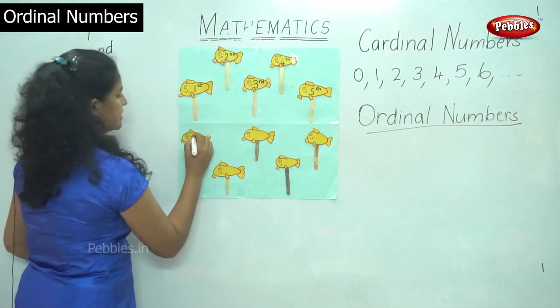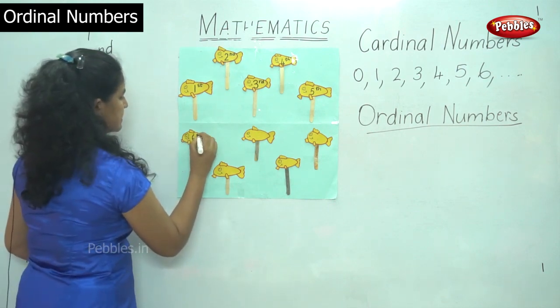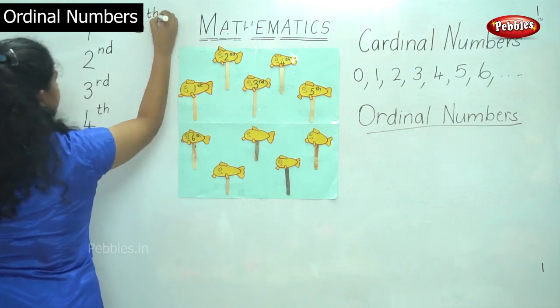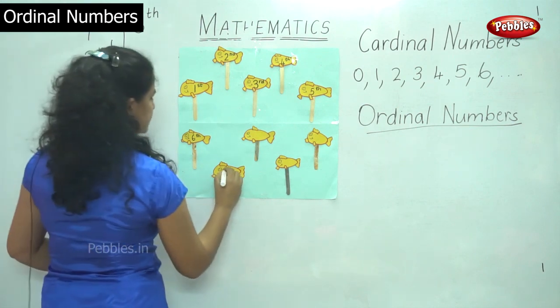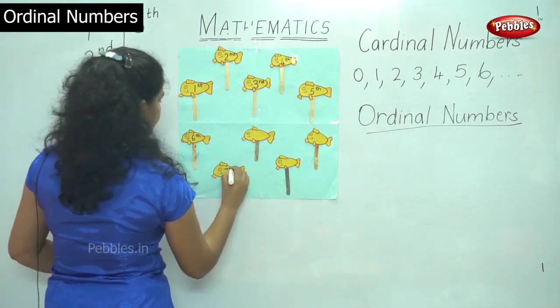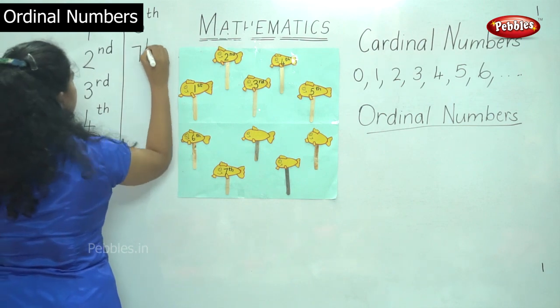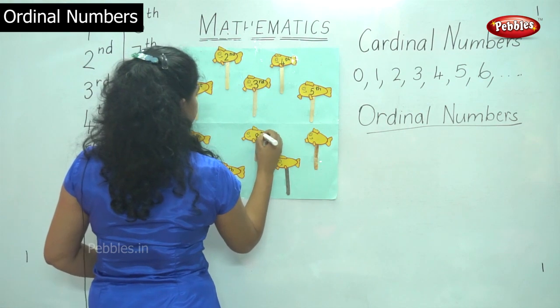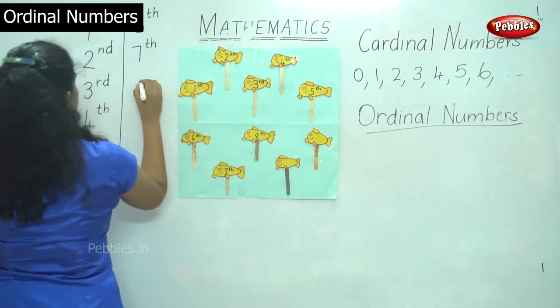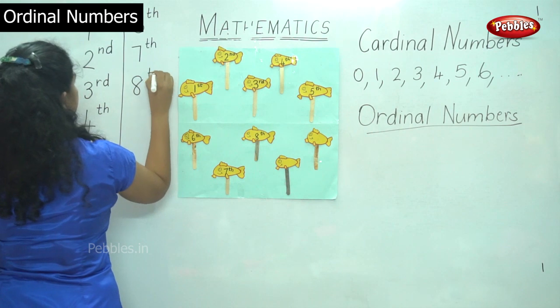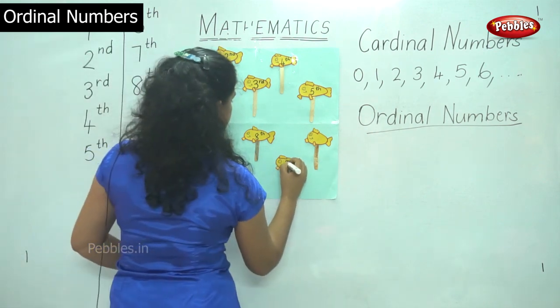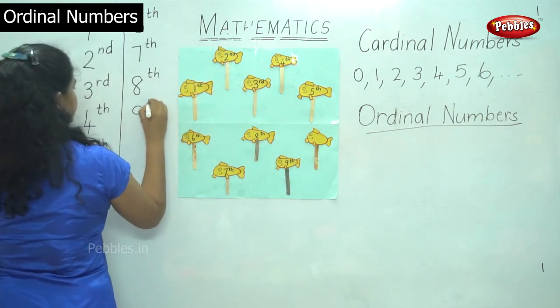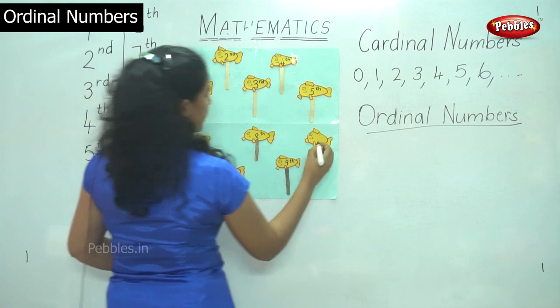So this is sixth. We write sixth. So we have sixth th. Next we have seventh. Next is eighth. Next is ninth. And this becomes tenth.